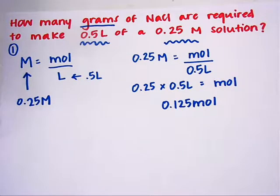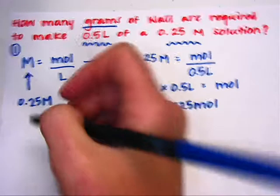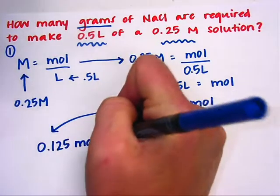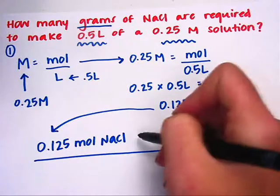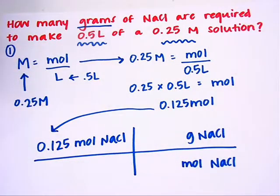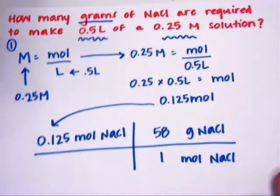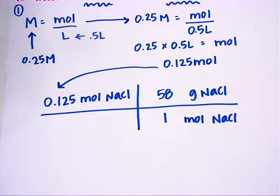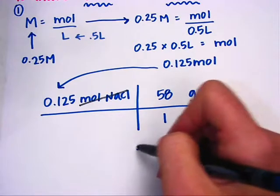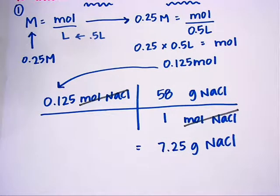That's my number of moles — it is not my final answer. I'm going to take that number and plug it in as my given information to convert. So I'll have 0.125 moles of NaCl and convert from moles of NaCl to grams of NaCl. The molar mass is 58 grams per mole, so 58 grams are in one mole. Make sure your units cancel out properly — and they do. My answer is 7.25 grams of NaCl. That is Method 1.